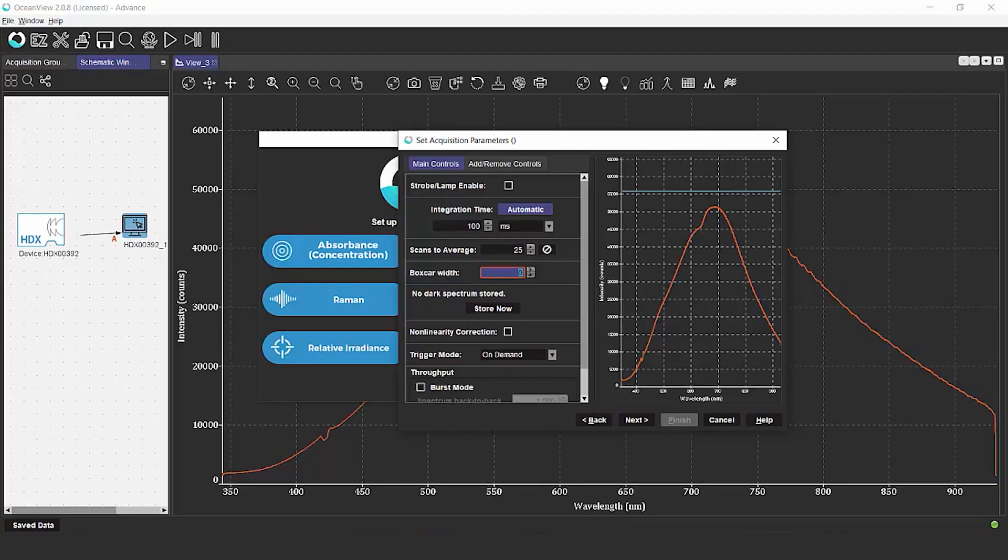So for example, if I pick a boxcar setting of five, which is what I'm going to use for these measurements, that's going to average five pixels on either side. The result is that we get some degradation potentially in our resolution, but it's going to give us a big improvement in our signal-to-noise ratio.